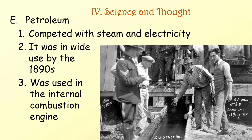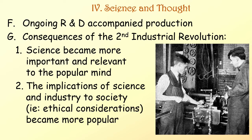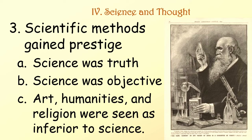Ongoing research and development accompanied production. And there were consequences to the Second Industrial Revolution. Science became more important and more relevant to the popular mind. The implications of science and industry to society — such as ethical considerations — became more popular. Scientific methods gained prestige. Science was now truth. Science was objective. And art, humanities, and religion were seen as inferior to science.